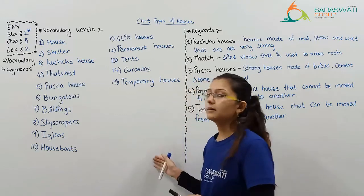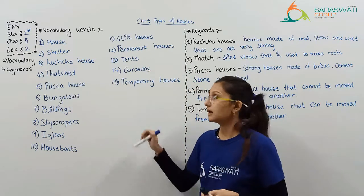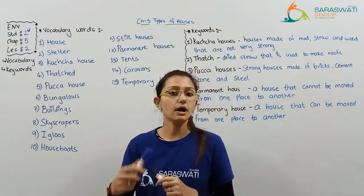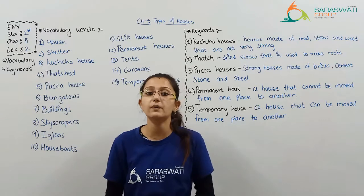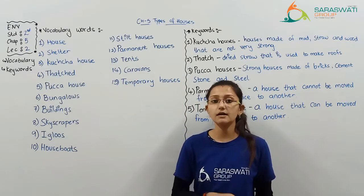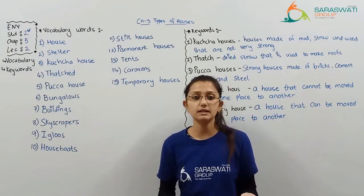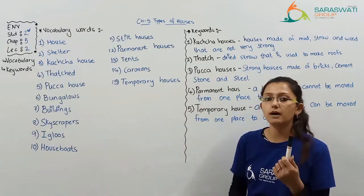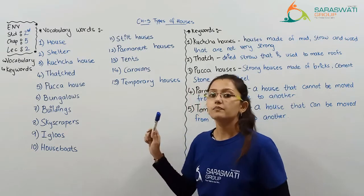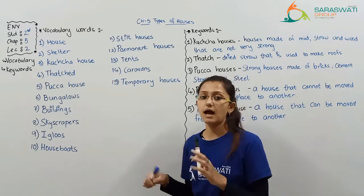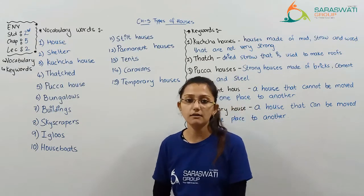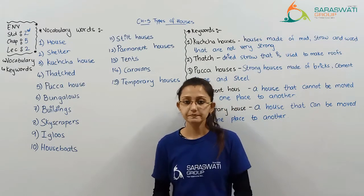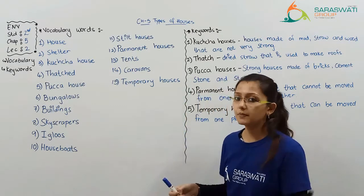So this was the vocabulary words of this chapter. There are total 15 vocabulary words in this chapter, which you have to copy in your classwork book. After this lecture, you have to note down all 15 words in your classwork book. Didi will send you the PDF of this.